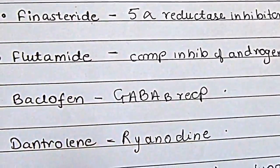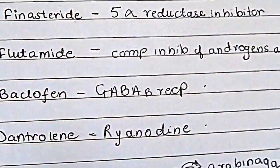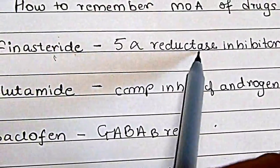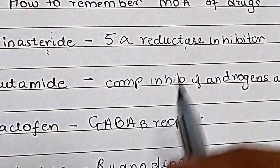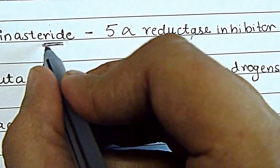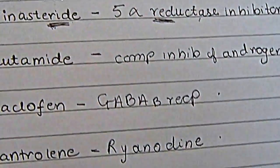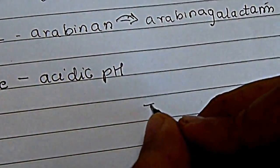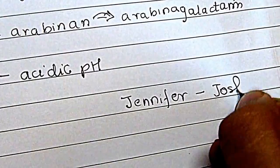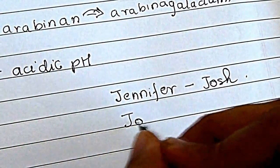Whenever baclofen and dantrolene appear in the same options, or finasteride and flutamide together, I just forget. The trick is to take the mechanism of action and the drug name and find some common letters in them — like 'RID' in finasteride and 'RED' in reductase. It's like when you're kids and you have a crush on, say, Jennifer Lawrence and Josh, and you merge their names to make 'Joshifer' — a fandom name.